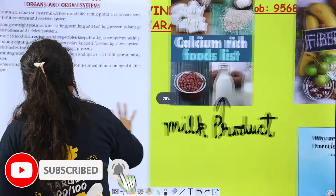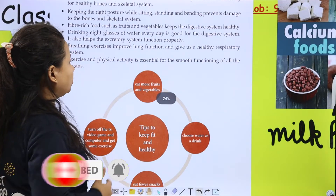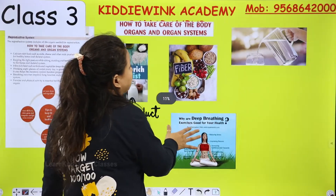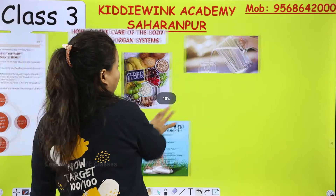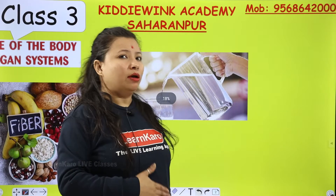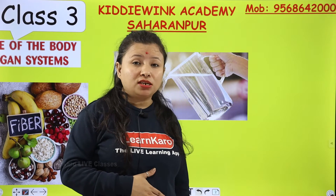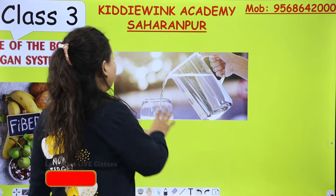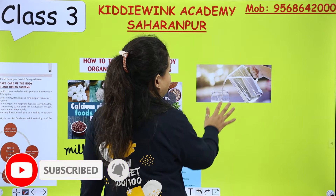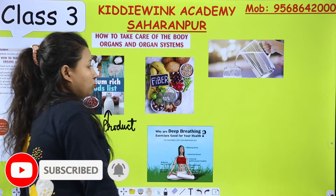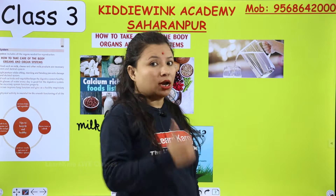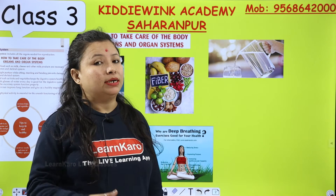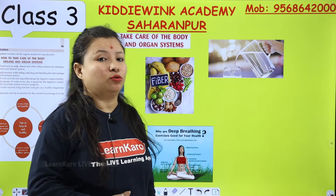Drinking eight glasses of water everyday is good for the digestive system. Agar aapka digestive system achhe se work nahi kar raha — matlab aap kuch bhi kha lete hain, aapko heavy feel hota hai, digest nahi aata, vomiting aane wali hoti hai — toh aapko daily eight glasses of water drink karna hai. Jaise hi aap paani peena start kar doge, body ka wastage urine ke through bahar aa jaayega aur aapka digestive system bilkul fine aur perfect ho jaayega.